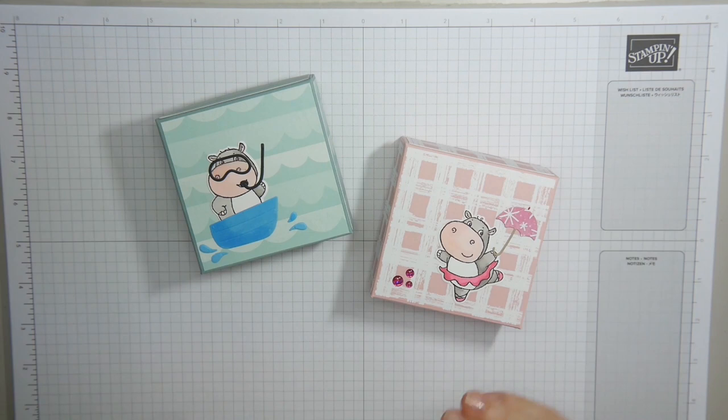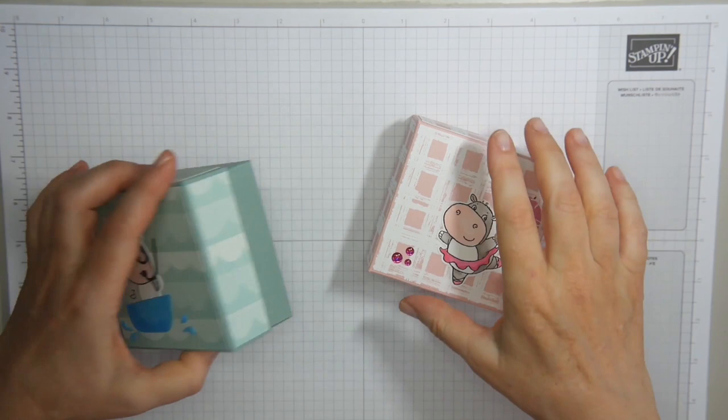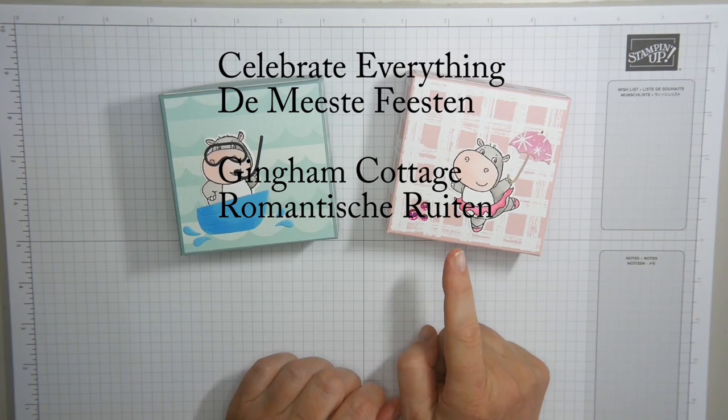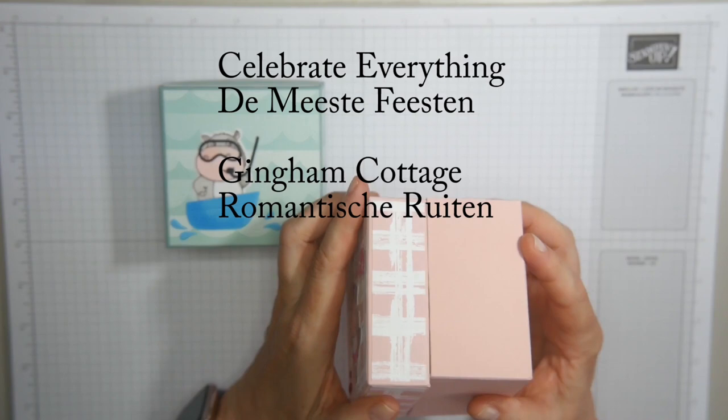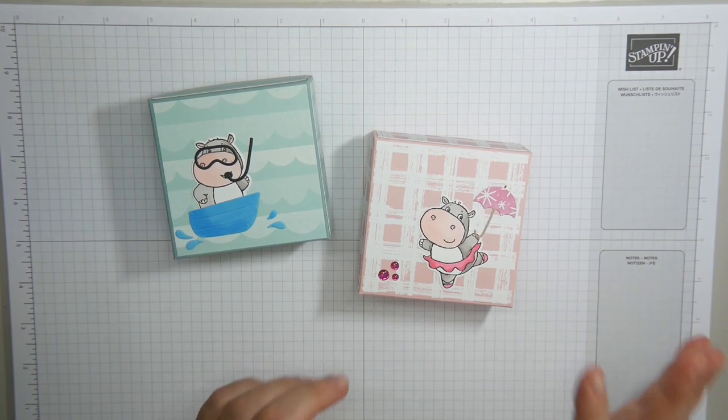So first I'm going to show you what supplies I have used for this box. I have used soft succulent cardstock, for this one blushing bride. The designer series paper that I've used is the gingham cottage and celebrate everything for the liner. And this one is also celebrate everything.